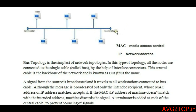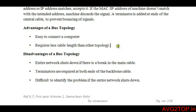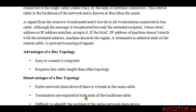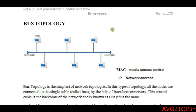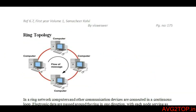A terminator at both ends prevents signal damage and keeps the message within the network until it gets delivered. An advantage of bus topology is that it is very easy to connect to a single cable. The disadvantages are: the entire network shuts down if there is any break in the main cable, a terminator at both ends is required to boost the signal, and it is difficult to identify problems when the entire network shuts down.